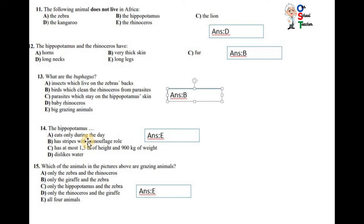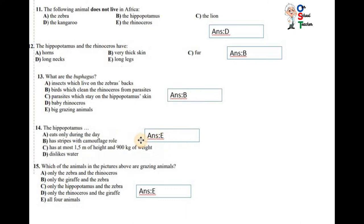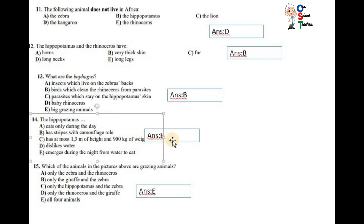The hippopotamus eats during only during the day, has stripes with camouflage role, has almost 1.5 meter of height and 900 kilogram of weight, likes water, emerges during the night from water to eat. Yes, hippopotamus emerges during the night from water to eat. Now question number 15. Which of the three animals in the picture above are grazing animals? Only the zebras and the rhinoceros, only the giraffe and the zebra, only the hippopotamus and the zebra, only the rhinoceros and giraffe, all four are grazing animals.